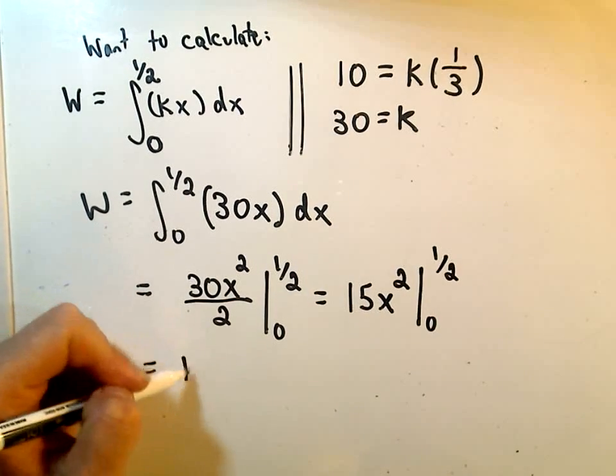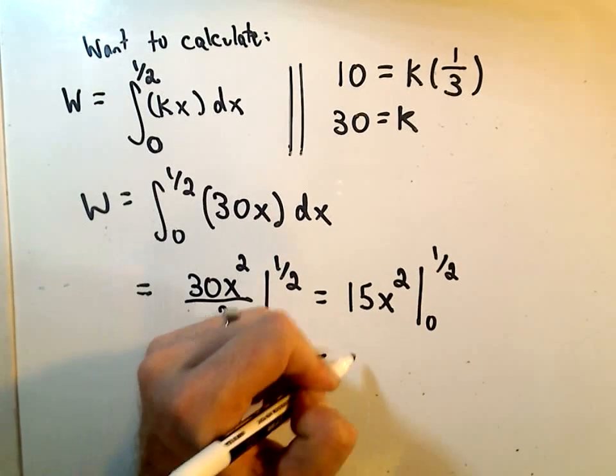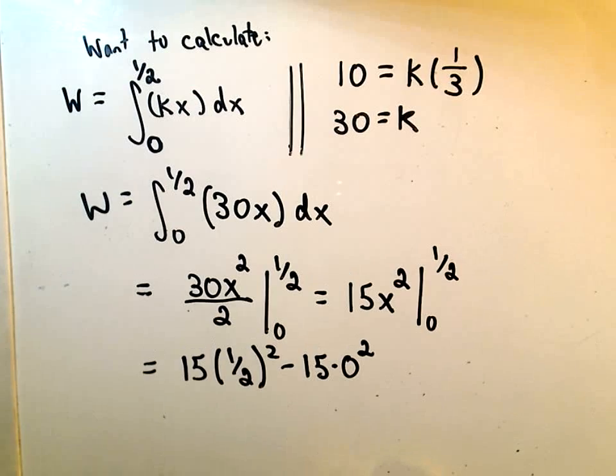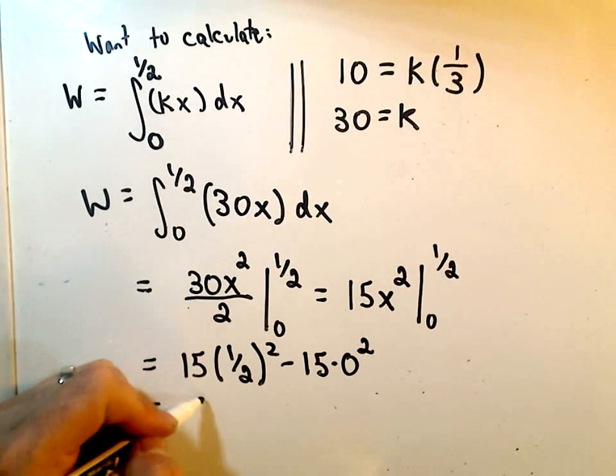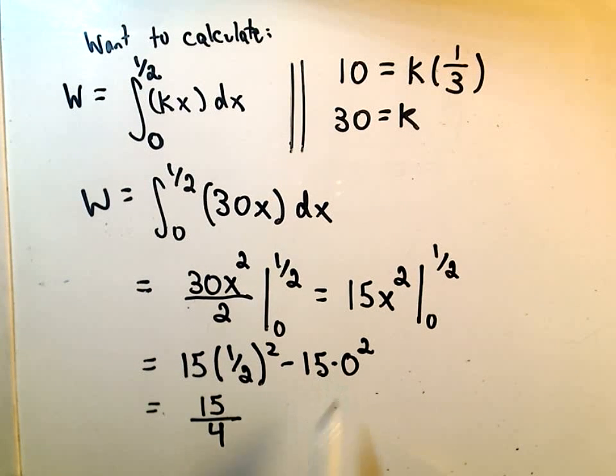And, if we plug that in, we'll get 15 times 1 half squared. The lower limit of integration, when we plug it in, we're just plugging in 0. So, 1 half times 1 half is 1 fourth. If you multiply that by 15, we'll get 15 fourths. Again, this is 0.